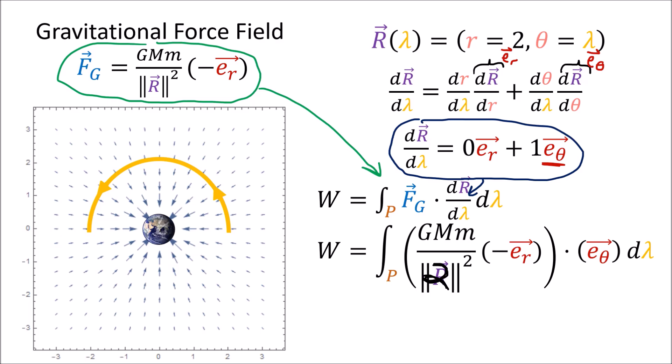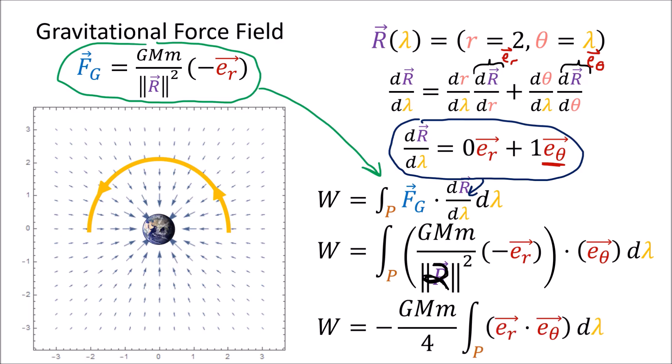To compute the work we plug in the formula for the force field and the tangent vector. Since the radius along this path is always a constant value of 2, this entire term can come out of the integral since it doesn't depend on the lambda time parameter. The only part we care about is the dot product of the er and eθ basis vectors. But since er always points outward and eθ always points counterclockwise, these two basis vectors are always at right angles — so the dot product always goes to zero, which means the entire integral goes to zero.